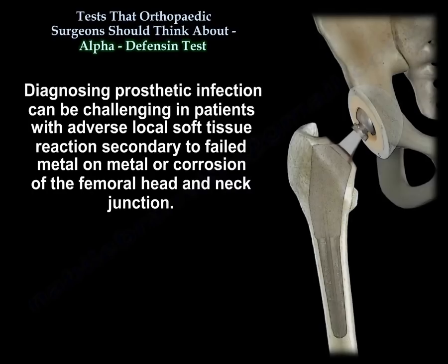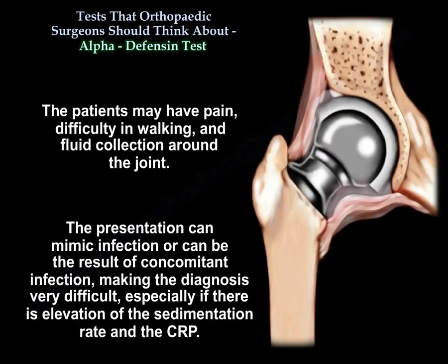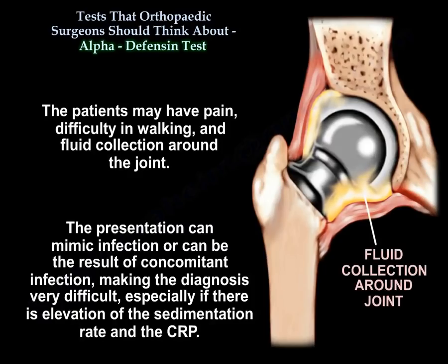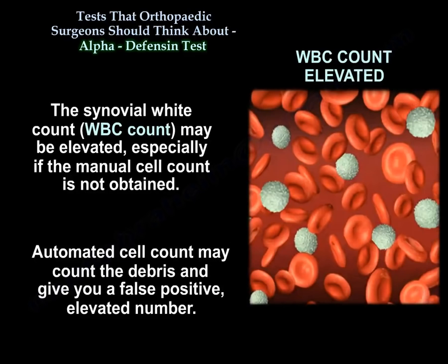Diagnosing prosthetic infection can be challenging in patients with adverse local soft tissue reaction secondary to failed metal-on-metal or corrosion of the femoral head and neck junction. These patients may have pain, difficulty walking, and fluid collection around the joint. The presentation can mimic infection or it can be the result of concomitant infection, making the diagnosis very difficult, especially if there is elevation of the sedimentation rate and CRP. The synovial white count may be elevated, especially if the manual cell count is not obtained — automated cell count may count debris and give a false positive elevated number.